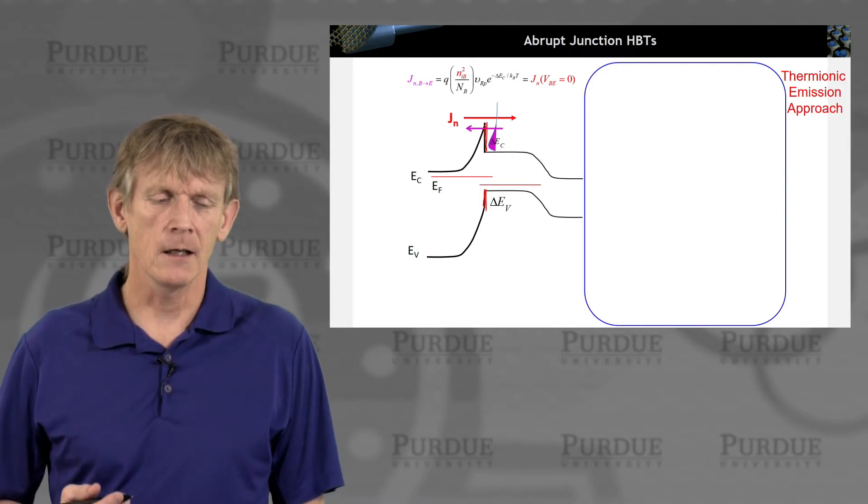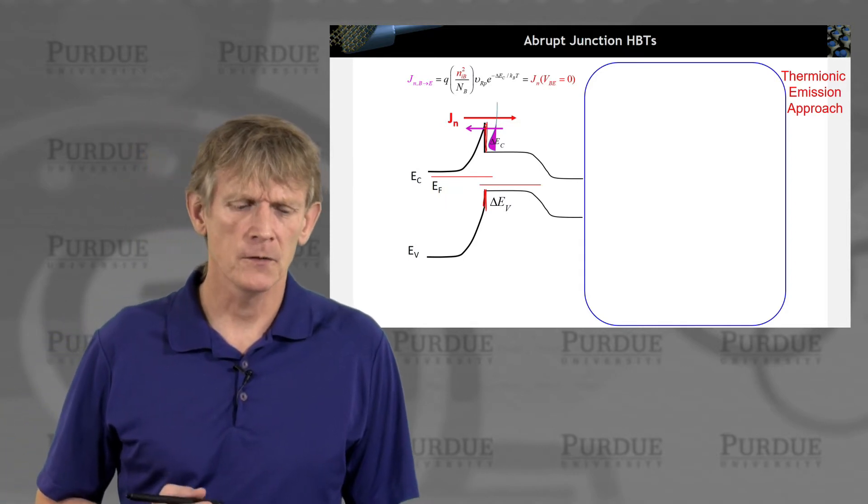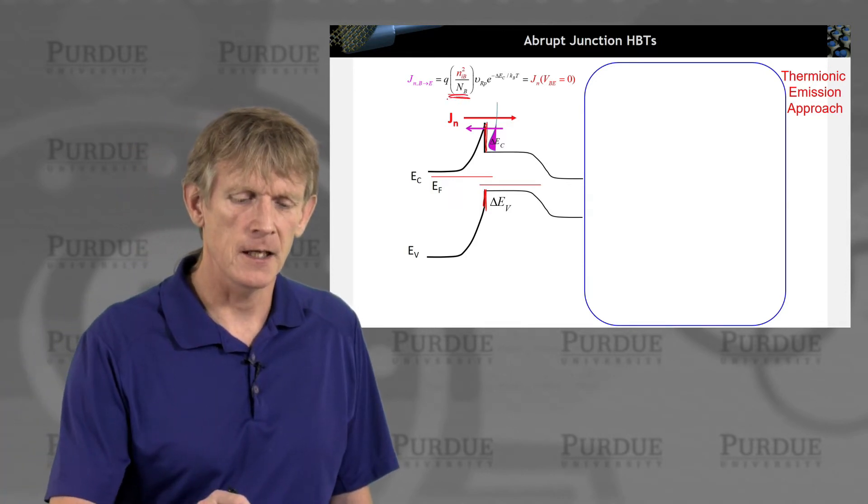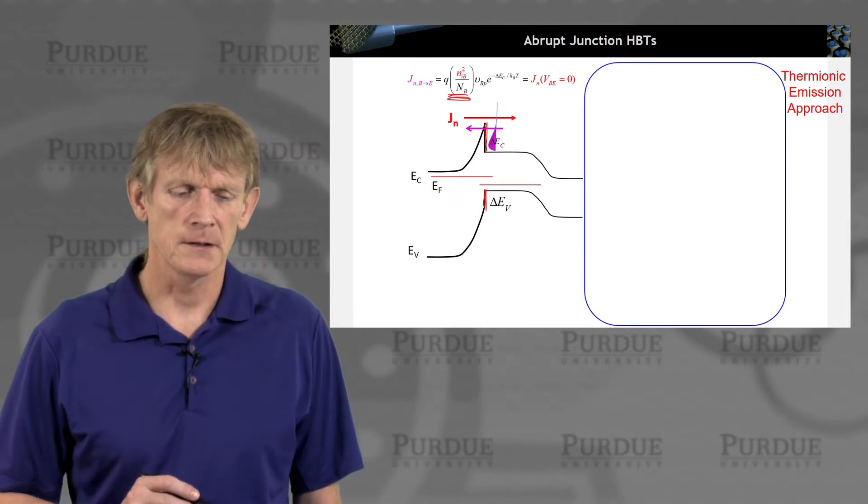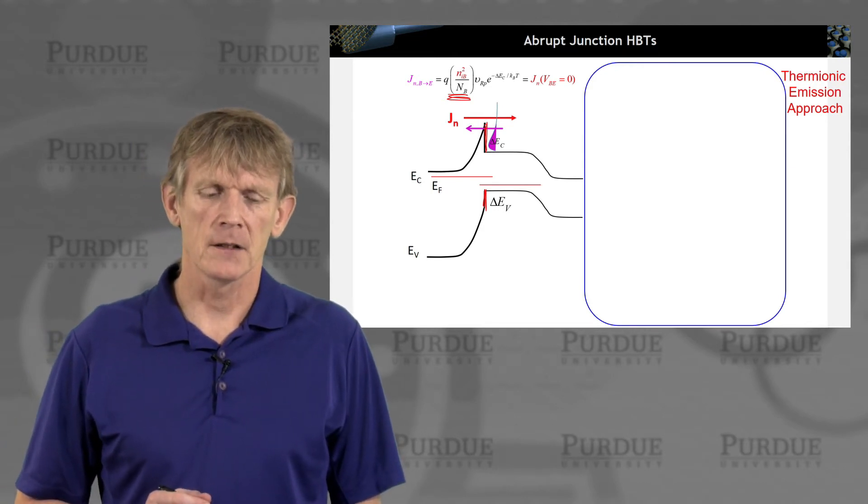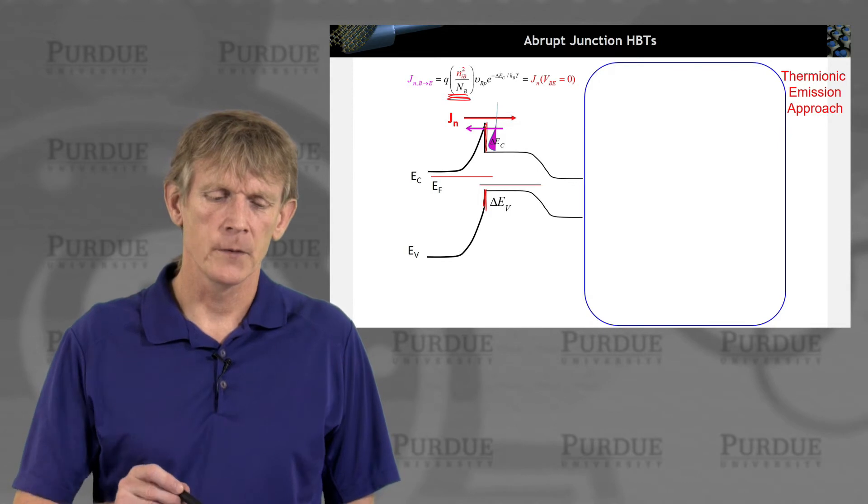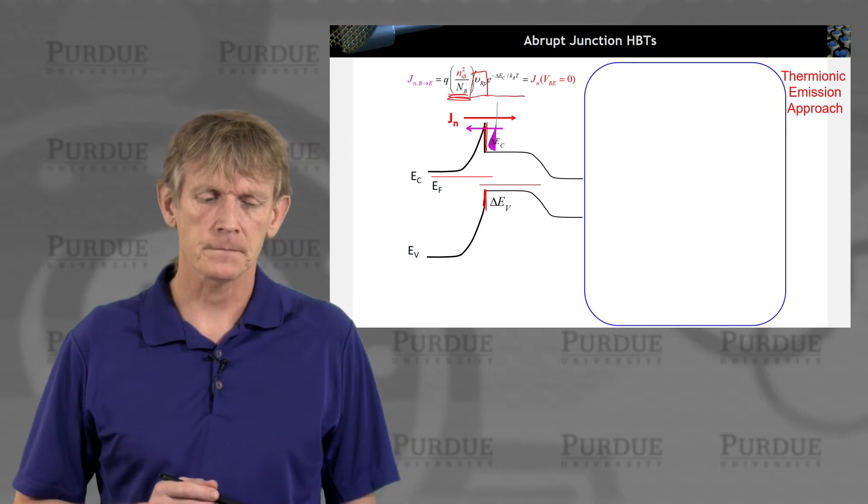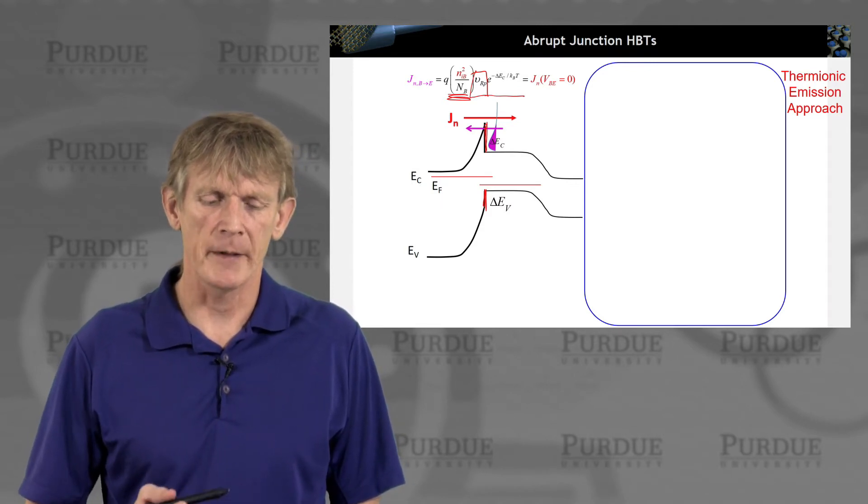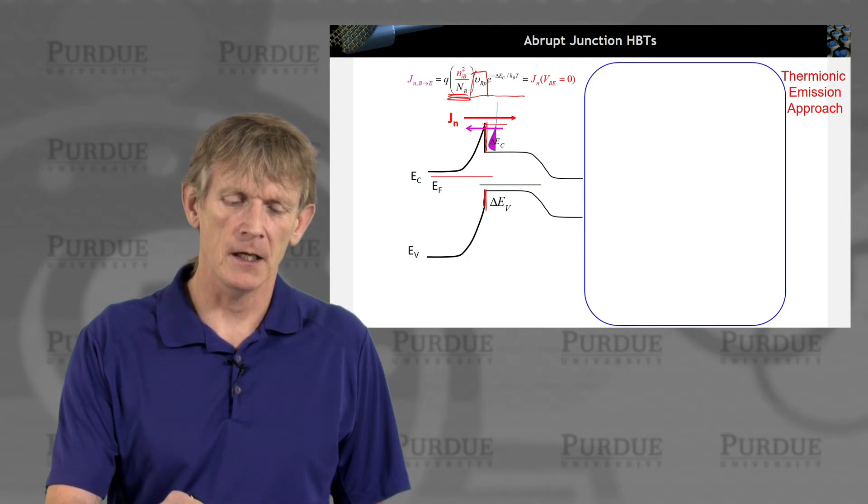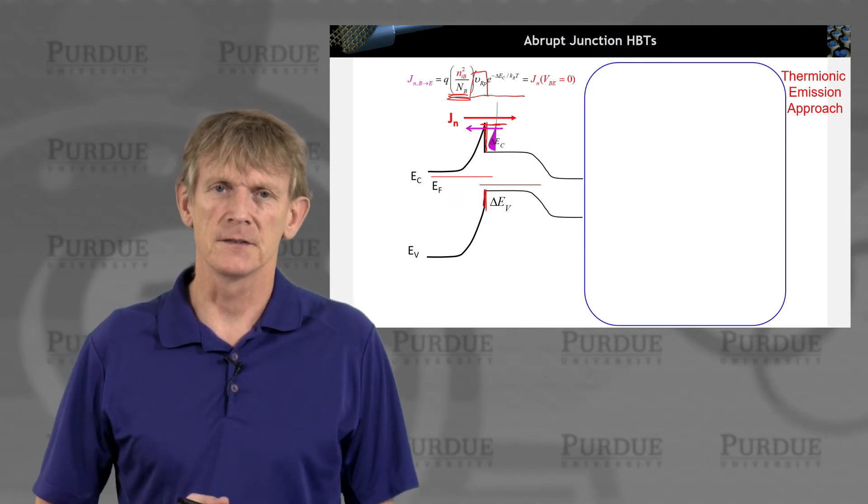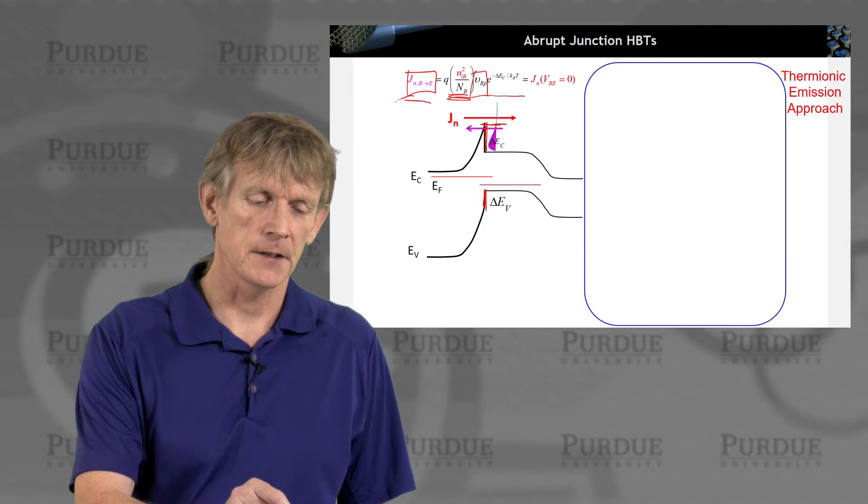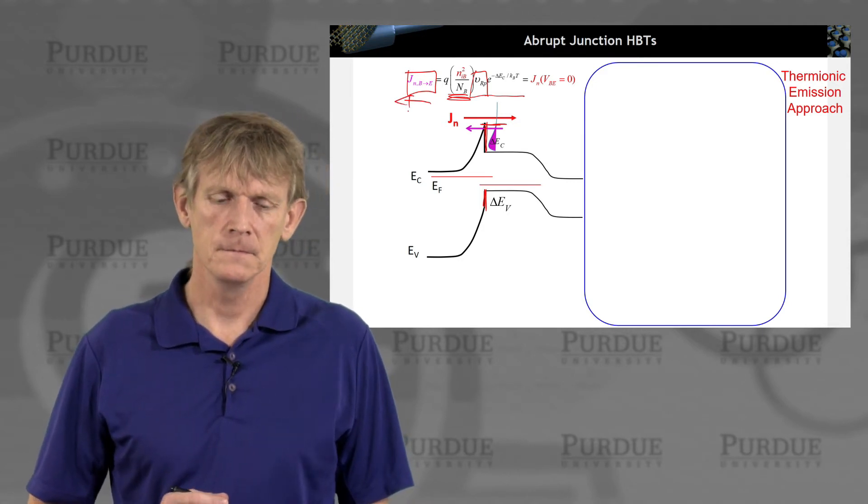We can write down the electron flow from the base to the emitter with the injection electrons governed by the base. These are the minority carriers. We inject them with a particular velocity, and they have to be high enough in energy to overcome this delta EC. This is current going this way, as indicated below by the purple vector.